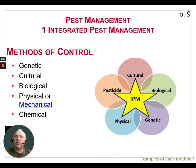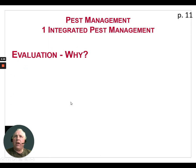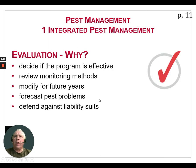Finally, chemical control is our last resort — used only if the other methods do not control the pests adequately. In combination, we need to look at all these methods together. At the end, we need to evaluate our program: we need to decide if the program was effective and if we got the control that we were aiming for. We also need to review monitoring methods and modify them for future years.